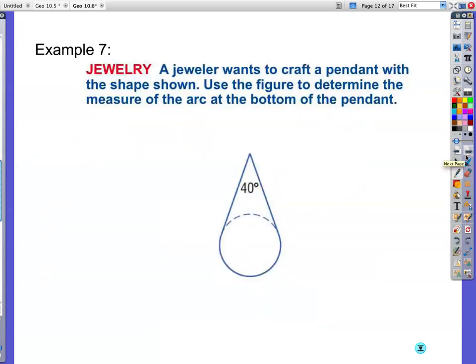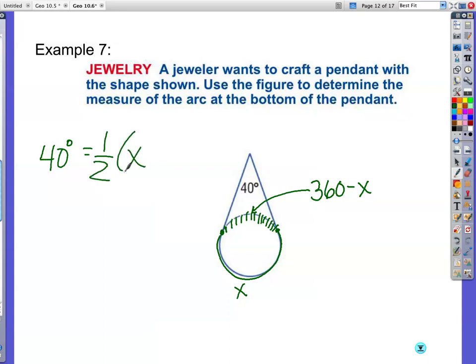This looks impossible. It looks like there's not enough information. A jeweler wants to craft a pendant with the shape shown. Use the figure to determine the measure of the arc at the bottom of the pendant. This is a big idea. I have no idea how much this is. I'm calling it X. But I have no idea what this is. I'm going to call that 360 degrees minus X. Now it's not so impossible, is it? So I take 40 is equal to 1 half the large arc, which is X, minus... Be careful here. I have to minus the small arc. I have to minus the entire value. 360 minus X.